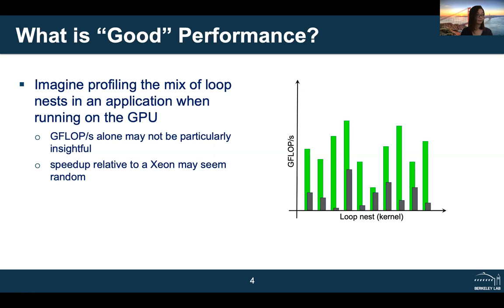A second approach: take your existing code and run it on a Xeon or an AMD EPYC and see what kind of baseline performance you get. You could then compare that baseline to the GPU performance and conclude whether you're getting good performance. The problem is that this really just tells you relative speedup — some kernels got enormous speedups, orders of magnitude faster on the GPU, while others saw only a very modest increase.